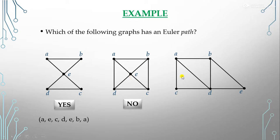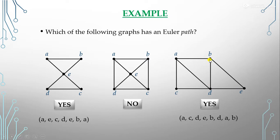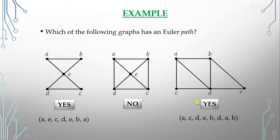For the third graph, we can form an Euler path: a, c, d, e, b, d, a, b. No edges are repeated here, but the starting point A and ending point B are different. Since the start and end vertices differ, it does not form an Euler circuit, but it does form an Euler path.